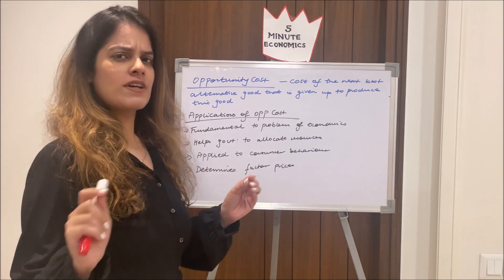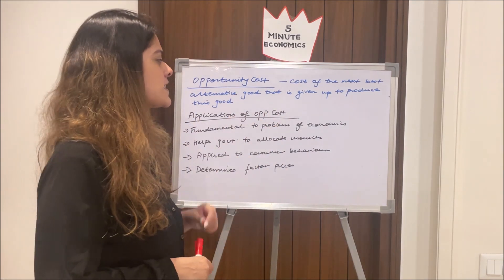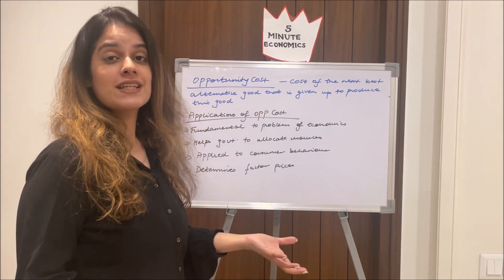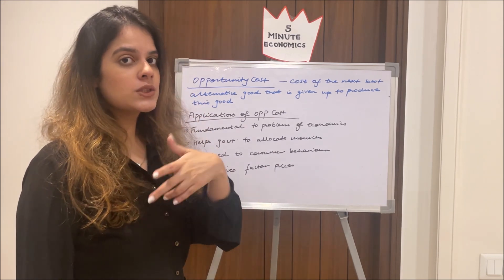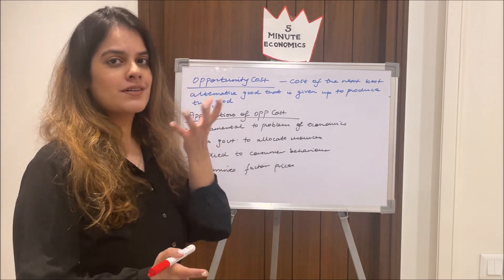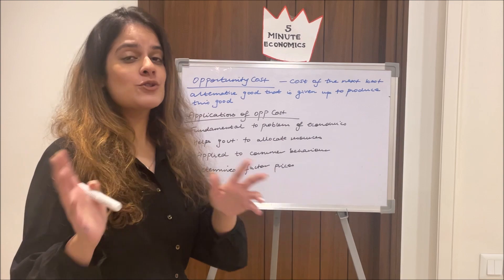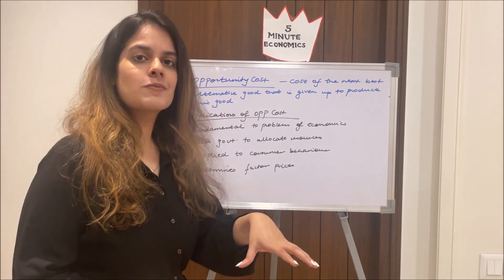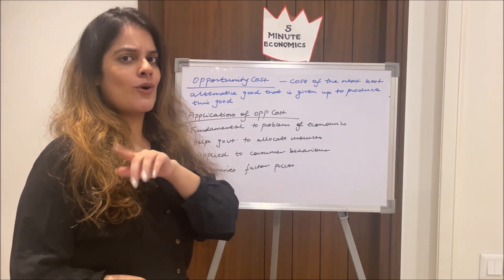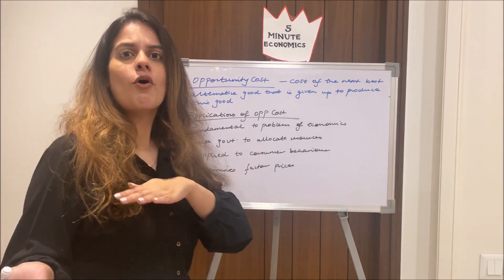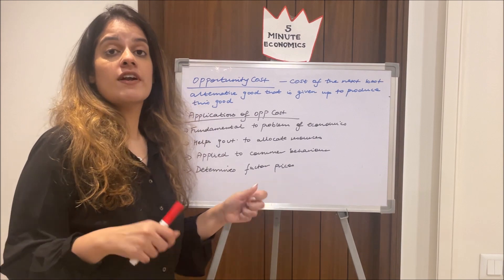Moving ahead to opportunity cost, which is a very interesting type of cost. Opportunity cost is the cost of the next best alternative good that is given up to produce or obtain this good. For example, I have 500 rupees and two options: go to McDonald's or watch a movie. Since I have 500, I have to choose between the two. The opportunity cost of the McDonald's meal is the movie, because that is the next best alternative I'm sacrificing. I'm choosing one over the other.